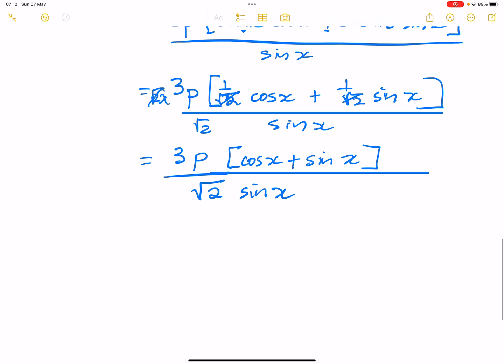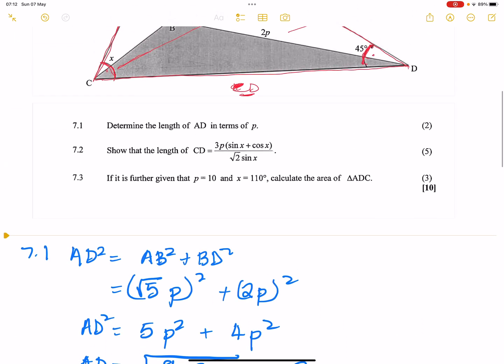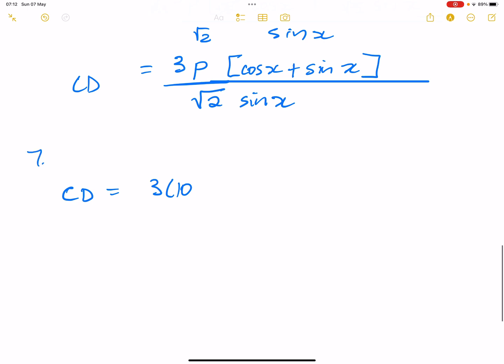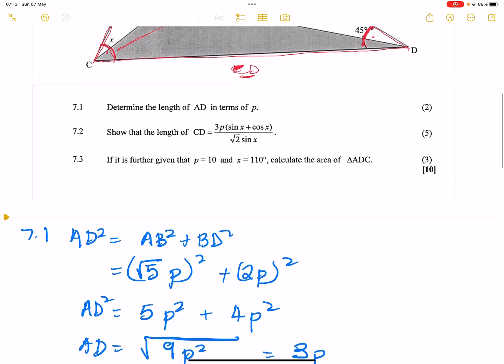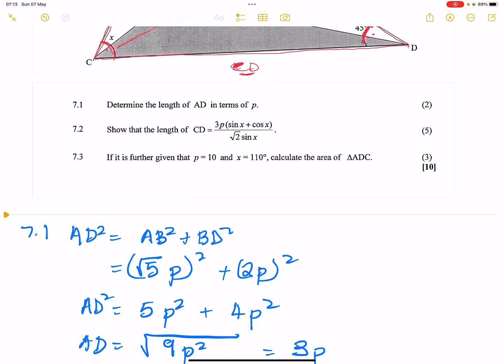So first let's find out the value of CD. So CD would be equal to 3 multiplied by 10. What number is this? This is 7.3. So 7.3, 3 multiplied by 10. We said this is the cos of 110 plus the sine of 110 divided by root 2 sine of 110. Remember, they did tell us that X is 110 degrees. So let me just put that in my calculator.